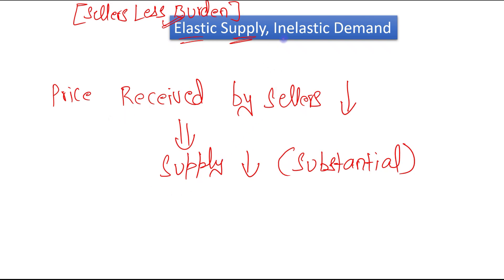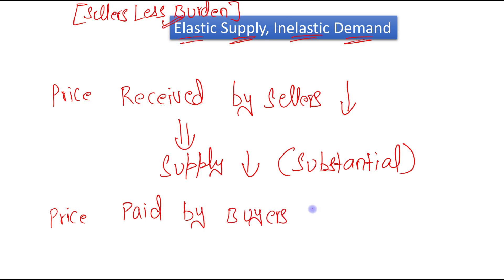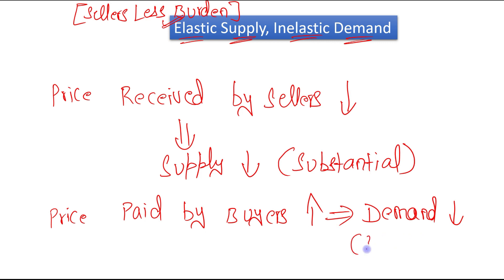Now, inelastic demand. Inelastic demand means that when a good is taxed, price paid by the buyers increases. This will lead to a decrease in demand for the good. But because the demand is inelastic, demand will decrease by only a slight amount — because the buyers are not having good alternatives to consume that particular good. In this case, they will be less willing to leave the market when the good is taxed, and when they remain in that market, they will bear more of the burden of the tax. So in this case, buyers will bear more burden of the tax.